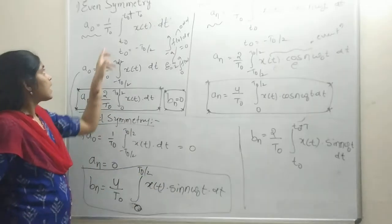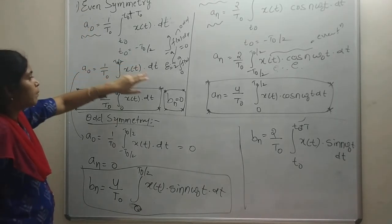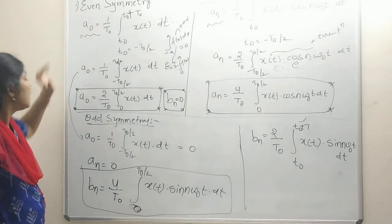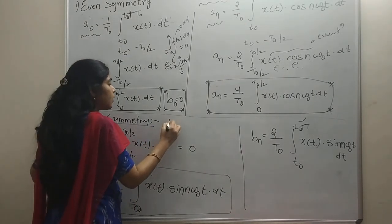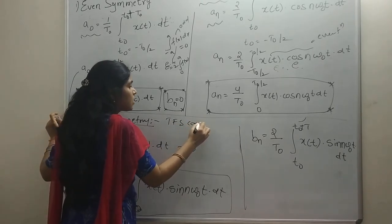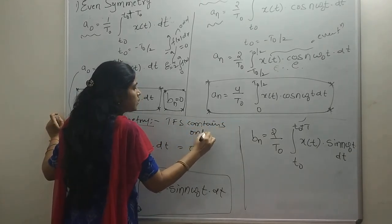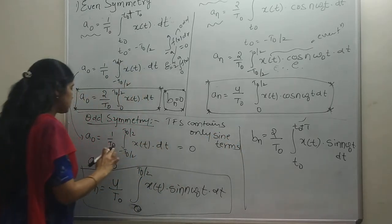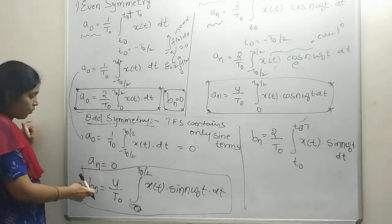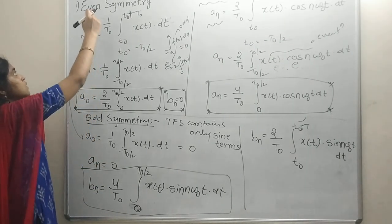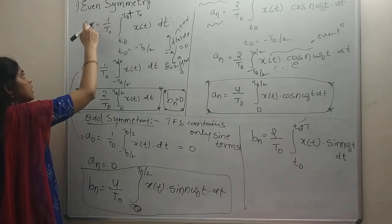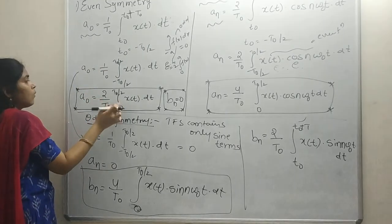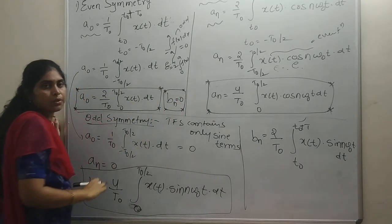In summary: if the signal has even symmetry, a₀ and aₙ terms are present while bₙ = 0 — only cosine terms exist. If the signal has odd symmetry, the trigonometric Fourier series contains only sine terms: a₀ = 0, aₙ = 0, and only bₙ exists. Conversely, for even symmetry, only cosine terms exist — a₀ and aₙ are present, bₙ = 0.